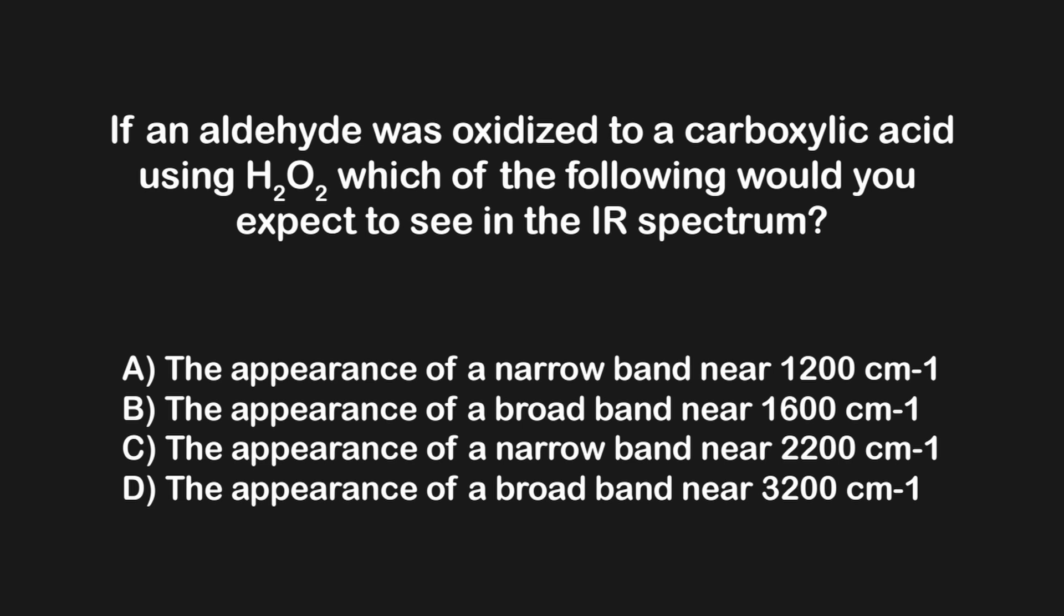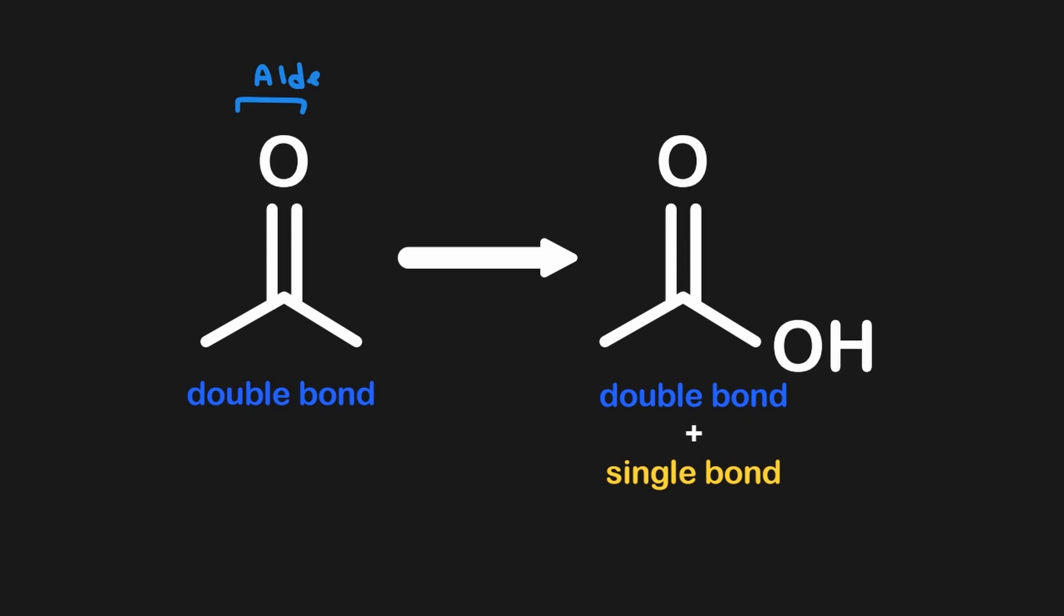If an aldehyde was oxidized to a carboxylic acid using H2O2, which of the following changes would you expect to see in the IR spectrum? Since IR spectroscopy identifies the presence of different functional groups, we should begin by considering the differences in functional groups between the two molecules. Both the aldehyde and the carboxylic acid contain a carbonyl group. However, only the carboxylic acid contains an OH group.